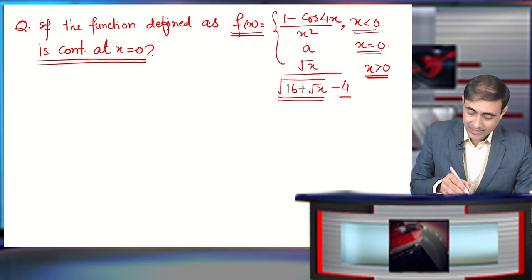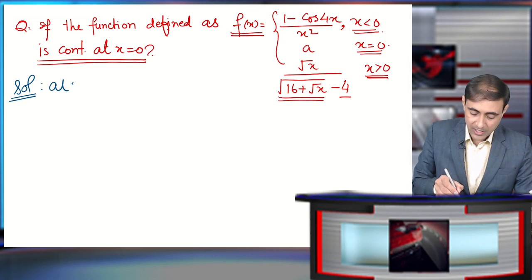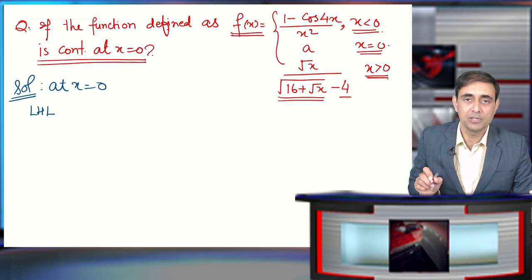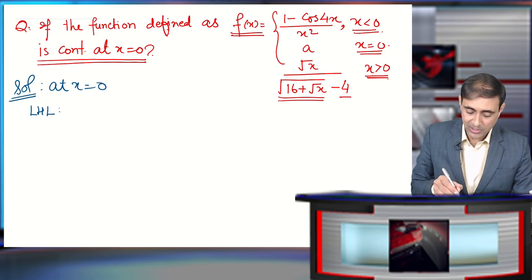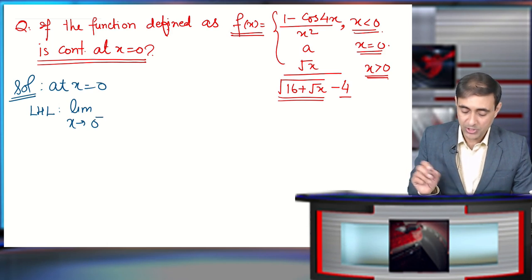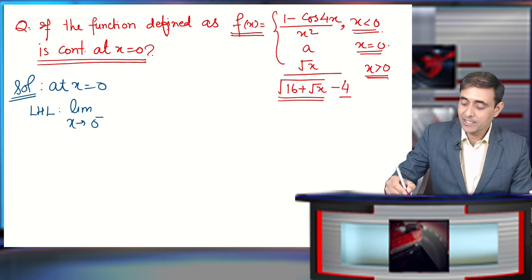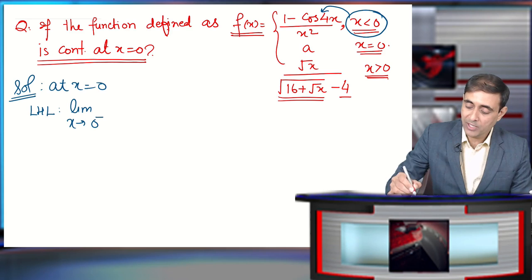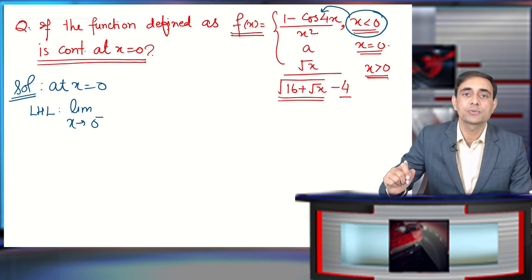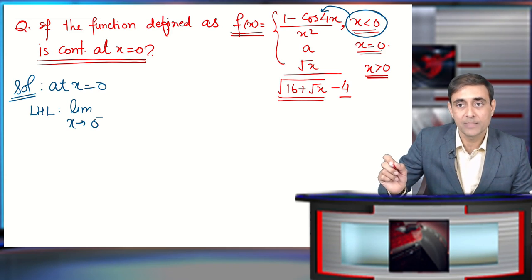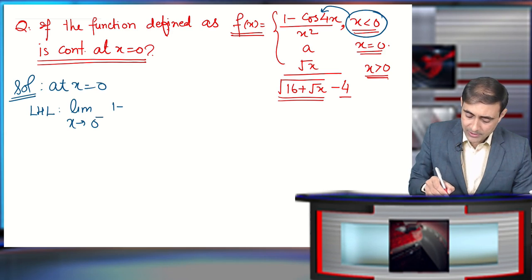At x equal to 0, let us find the left-hand limit. The left-hand limit will be limit x tending to 0 minus, because we are finding the limit at x equal to 0 minus. So x will be slightly smaller than 0, and if x is slightly smaller than 0, the value of the function is (1 - cos 4x) / x².